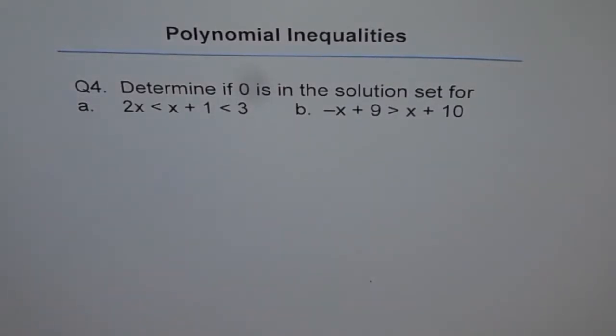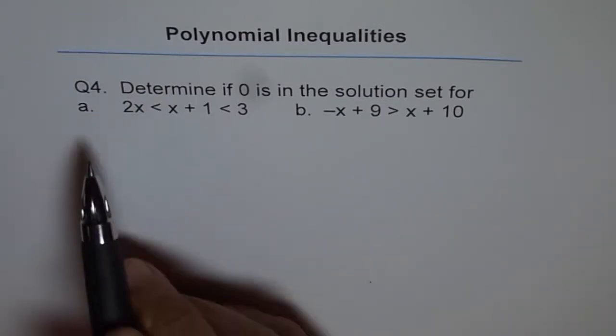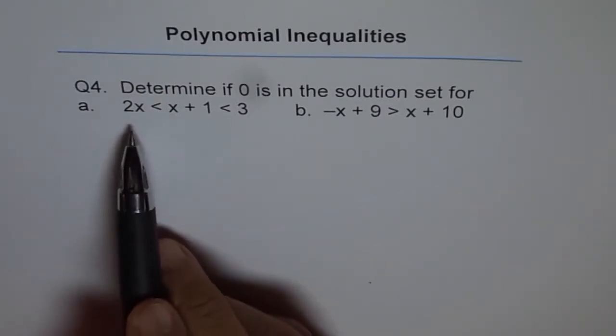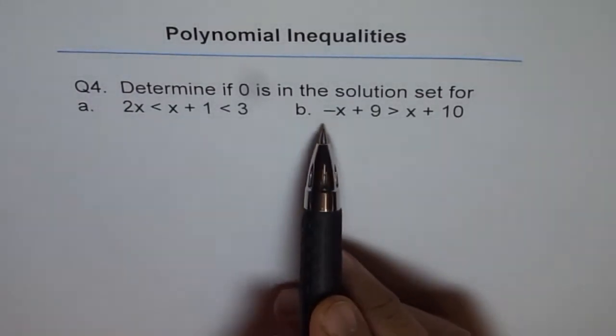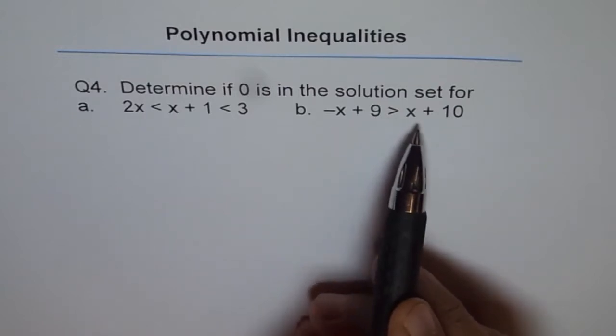Polynomial inequality is question 4. Determine if 0 is in the solution set for A: 2x < x + 1 < 3, or B: -x + 9 > x + 10.